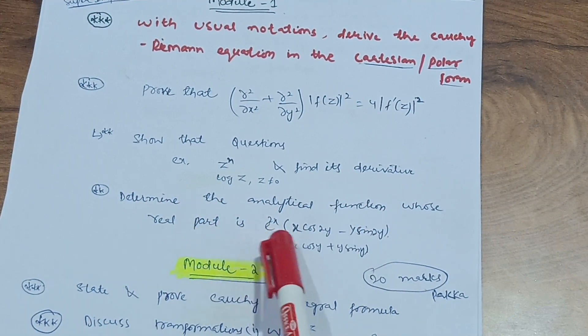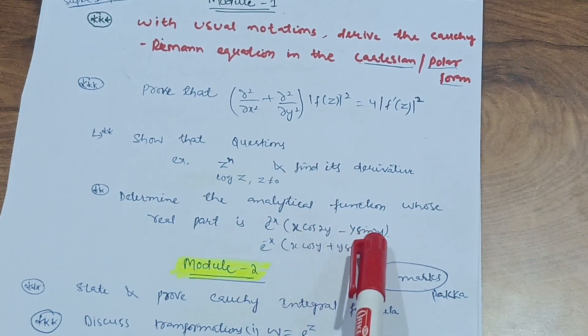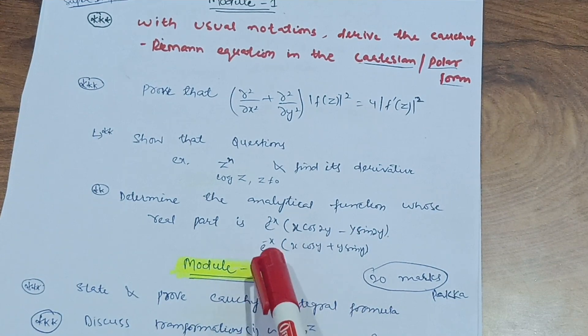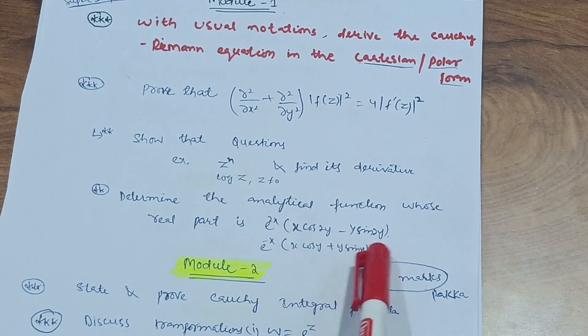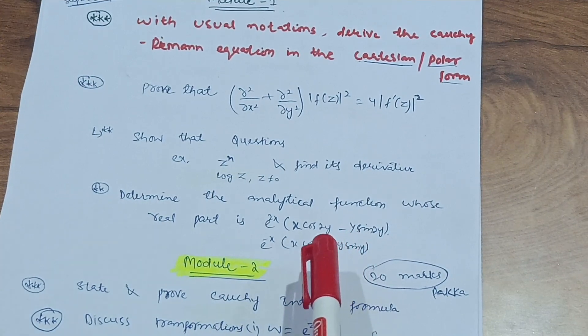That is, determine the analytical function whose real part is, suppose I have taken here two examples: e^(2x) cos(2y) - y sin(2y), and e^(-x)[x cos(y) + y sin(y)].